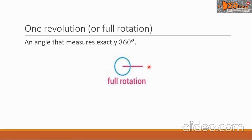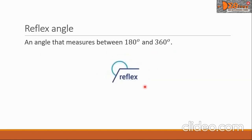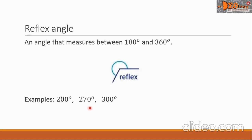Another angle is the reflex angle. It is an angle that measures between 180 degrees and 360 degrees. Here is a picture of a reflex angle. Some examples of reflex angles are 200 degrees, 270 degrees, and 300 degrees.